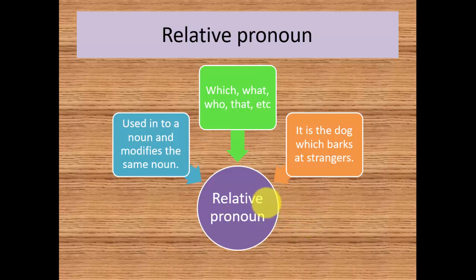WH form questions are always answered by relative pronouns. It is the dog which barks at the strangers. So it is the dog that barks at strangers. We are defining the quality of the dog, the noun. The dog is the noun and we are modifying the noun, which barks at the strangers.